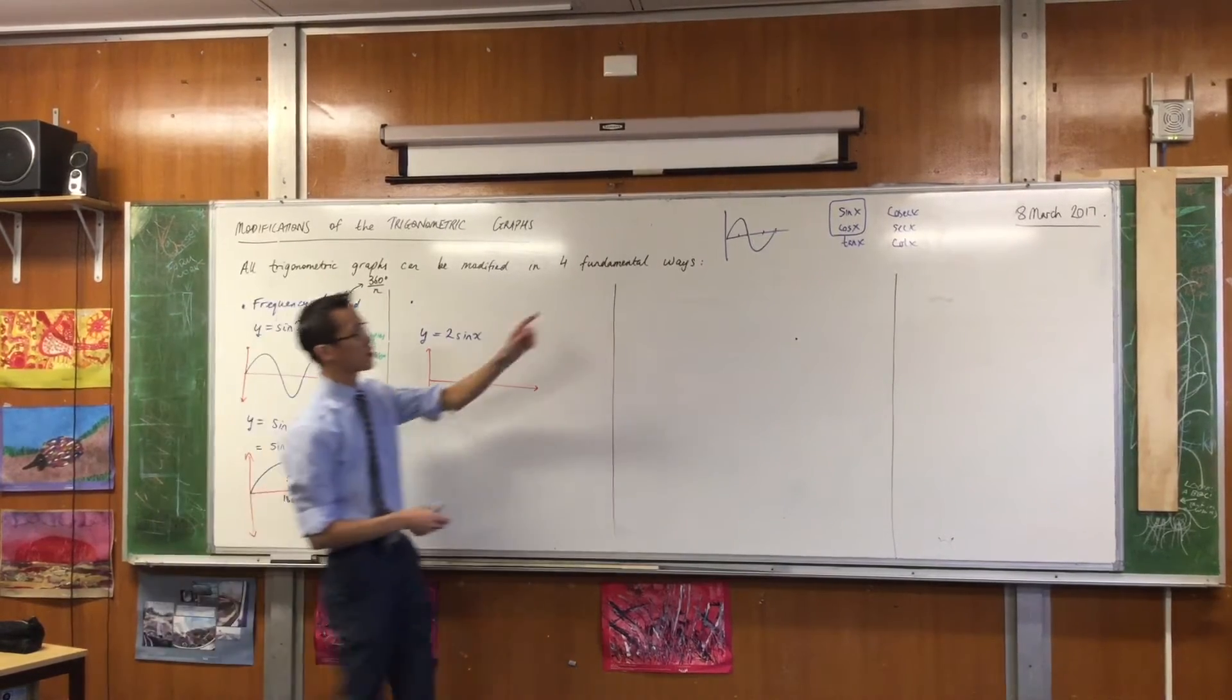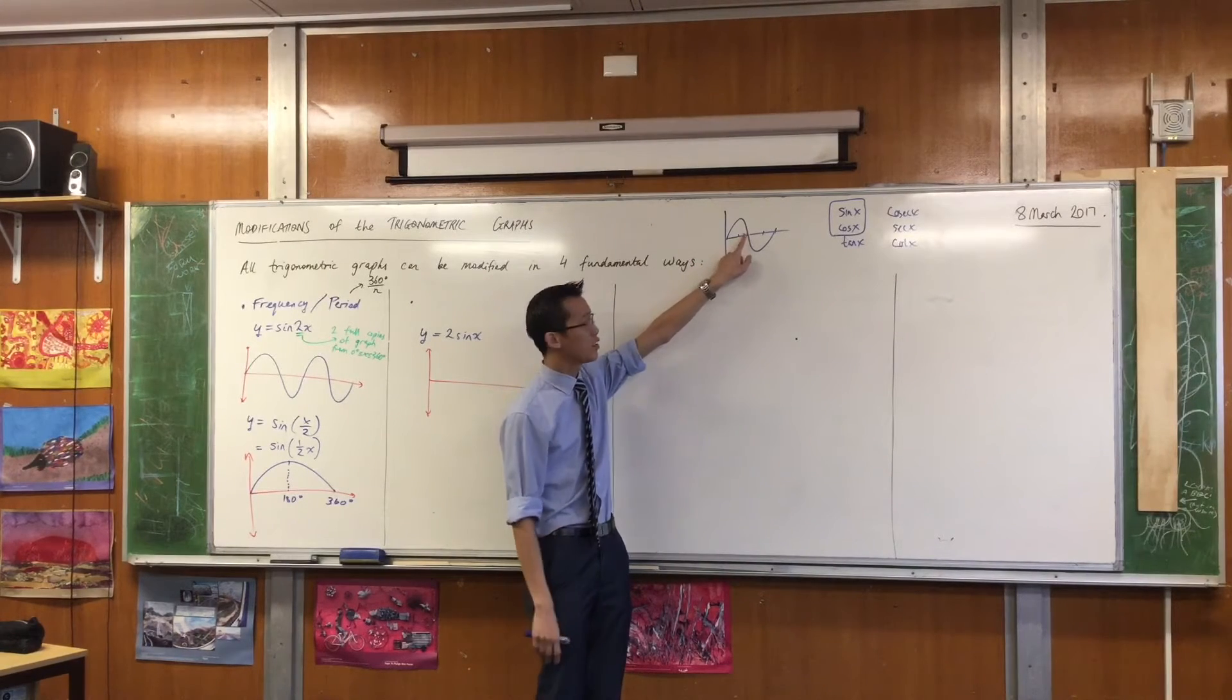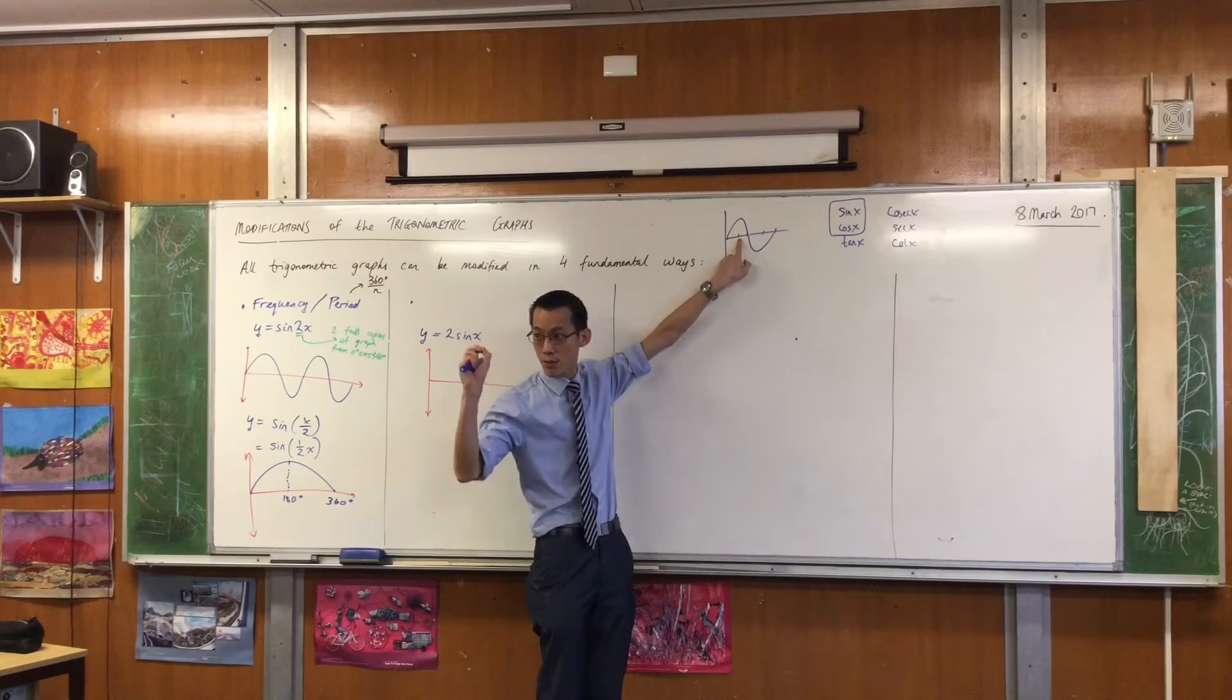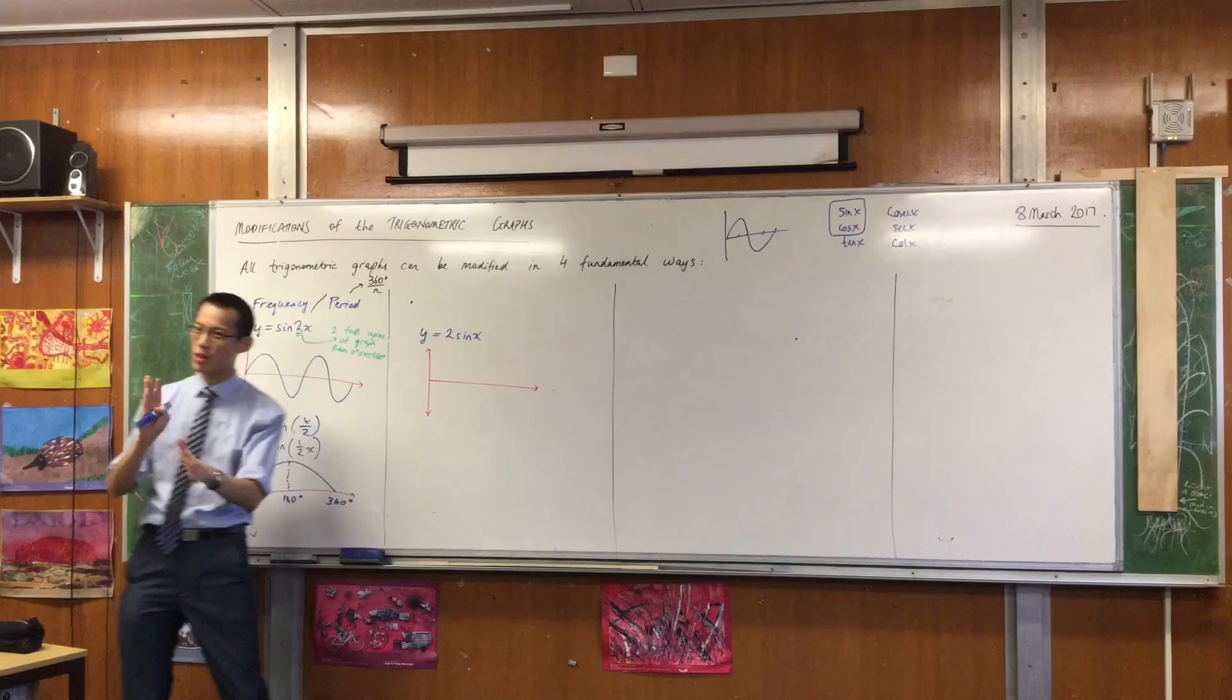When I go back to 180 degrees, 2 sine 180 degrees is still 2 times 0, so it's still 0, right? So all of those intercepts are going to be the same.